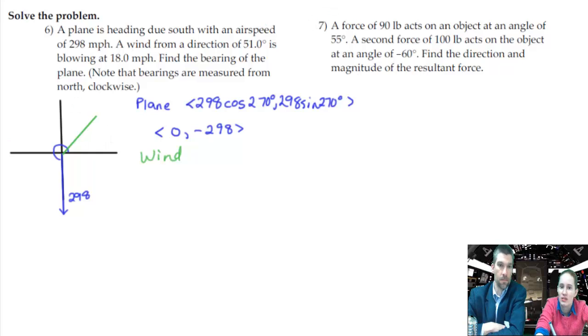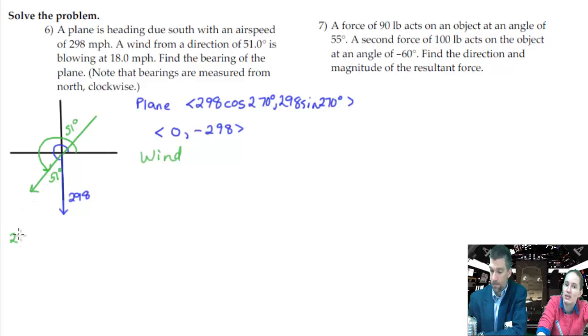This right here, they're telling us is 51 degrees, but the issue is that it is from 51 degrees. It's blowing that direction towards the origin from that way. So actually, if you wanted to put it in standard form, it'd be this angle going this direction. And so vertical angles means that this is 51 degrees. And that means that if we want to find the angle to get around to here, we need to do... We've got to go with that whole big beastie guy, which is 270 minus 51.